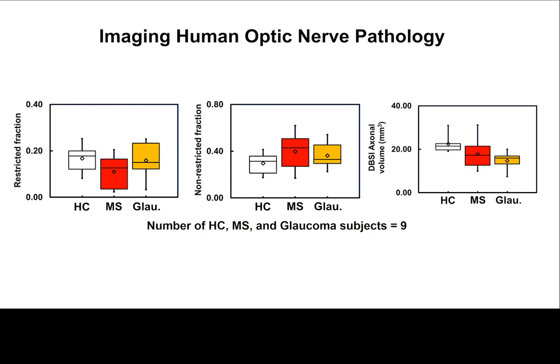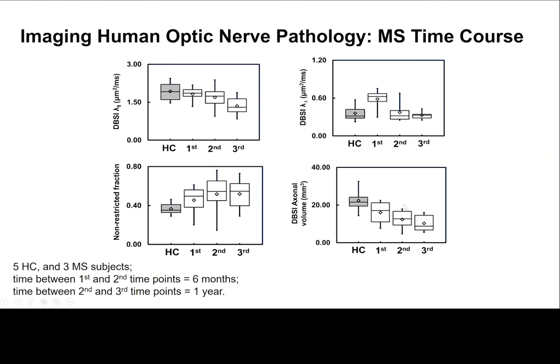Looking at the inflammation and axonal loss components: there is no cellularity change, and there is a slight increase in vasogenic edema over the tissue void. We still see a decrease in axonal density and axonal volume — so axonal counts are lower in both MS and glaucoma patients.